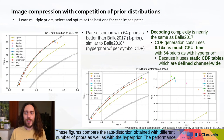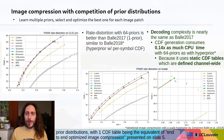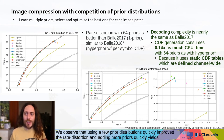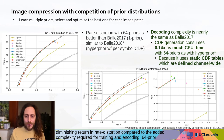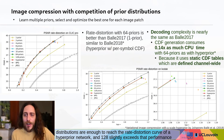The performance of a 64-priors model is essentially the same as that of a hyperprior model. The figure on the right zooms in on different numbers of prior distributions, with one CDF table being the equivalent of the baseline end-to-end optimized image compression. We observe that using a few different distributions quickly improves the rate-distortion performance, and adding more priors yields diminishing returns. 64 prior distributions are enough to reach the rate-distortion curve of a hyperprior network, and 128 priors slightly exceeds that performance level.